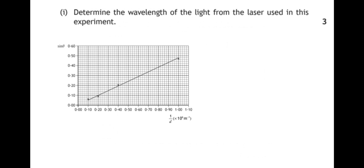Determine the wavelength of the light from the laser used in this experiment. So how can we do this? Well, we have this formula: d sine theta equals m lambda. And in this case m is one because we're dealing with the first order maxima. So d sine theta equals lambda. Now if I rearrange that formula a little bit, I get sine theta equals lambda times one over d. I'm basically dividing both sides by d.